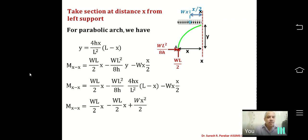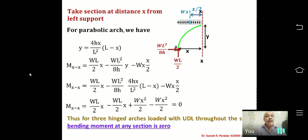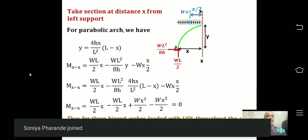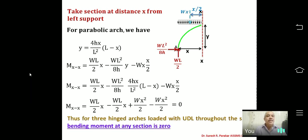Therefore M_XX = 0, which shows the bending moment at any section is zero, provided the UDL is throughout the span. In competitive exams, the answer to 'bending moment at any section on a three-hinged arch loaded with UDL throughout the span' is zero.